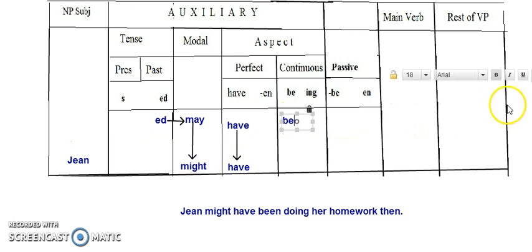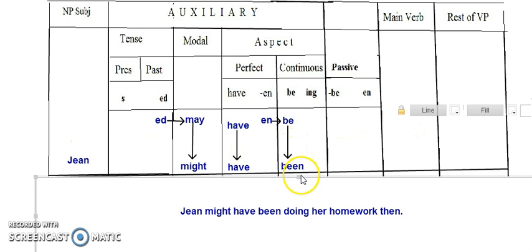And hop the affix. In this case, -en. We said the affix never goes down, it always hops to the right to the be. And the be goes down and it becomes been.